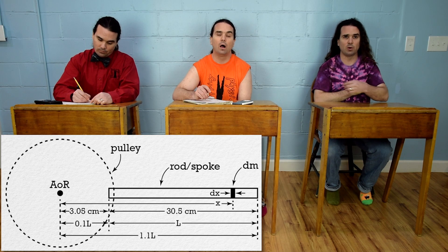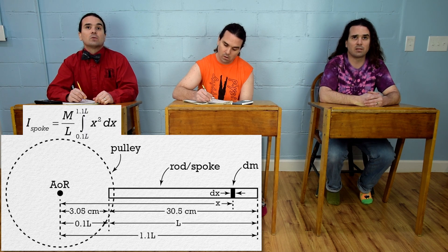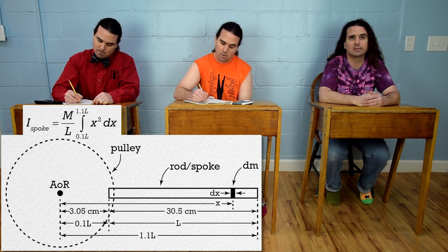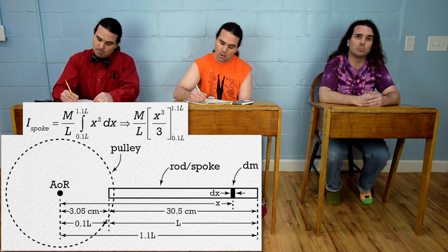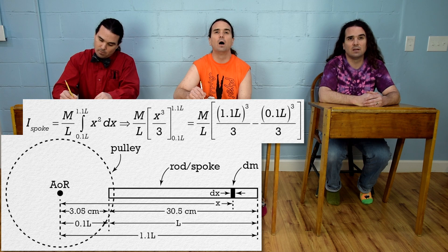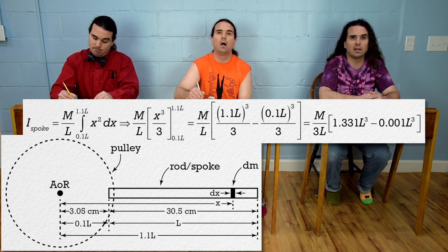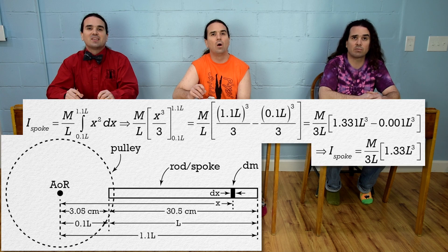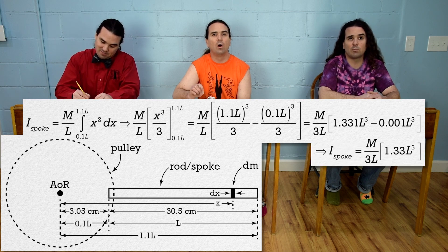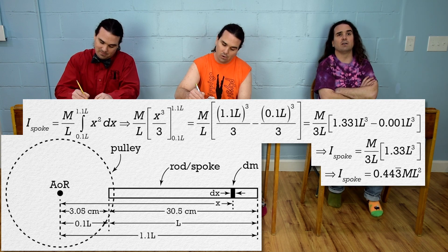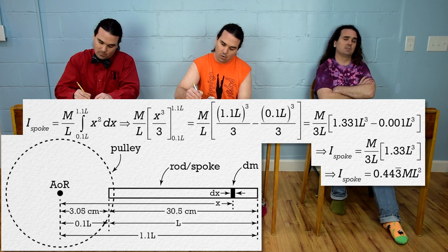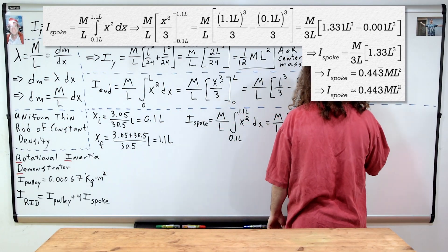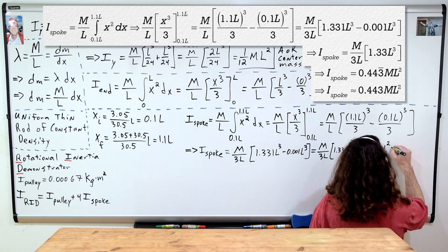Sure. The rotational inertia of a single spoke equals the mass of the spoke divided by the length of the spoke times the integral from 0.1L to 1.1L of x-squared with respect to x. The integral of x-squared is x-cubed over 3. Substituting in the limits and factoring out one-third: 1.331L³ minus 0.001L³ equals 1.33L³, and dividing 1.33L³ by 3L gives the rotational inertia of one spoke equal to, with three significant digits, 0.443 times the mass of the spoke times the length of the spoke squared.